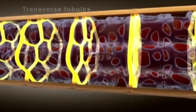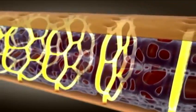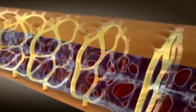Transverse, or T-tubules, are regularly spaced foldings of the sarcolemma that branch extensively throughout the muscle fiber.